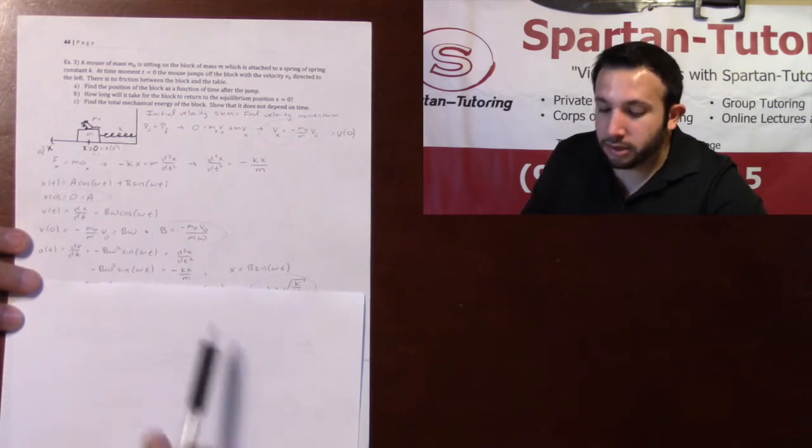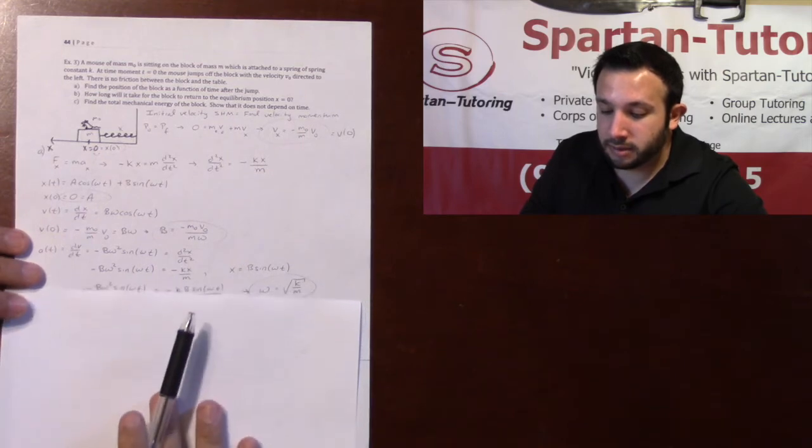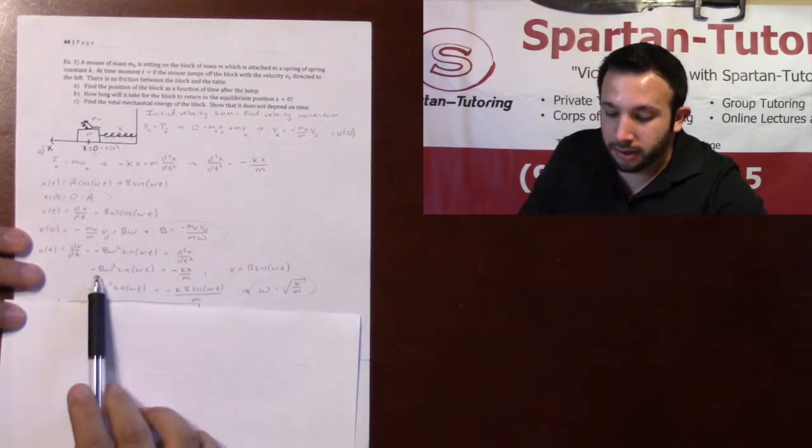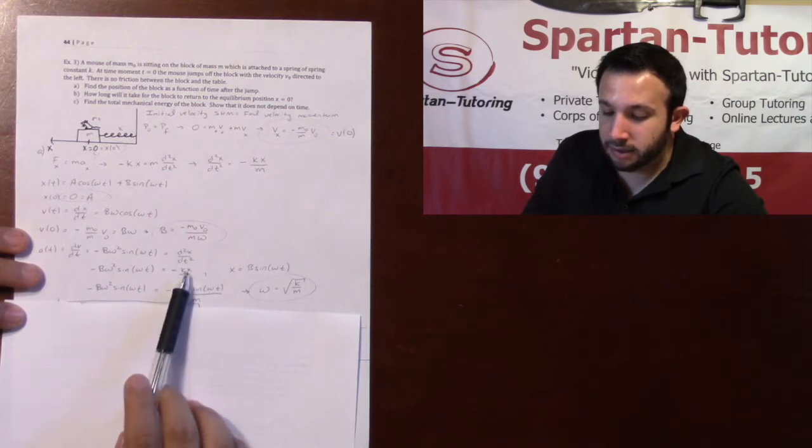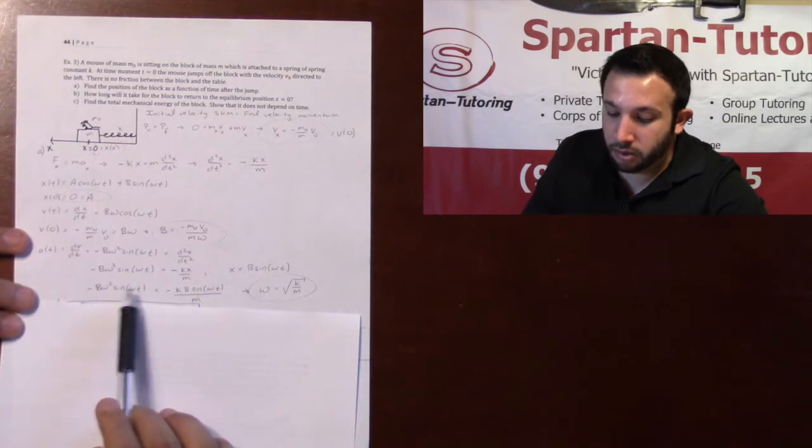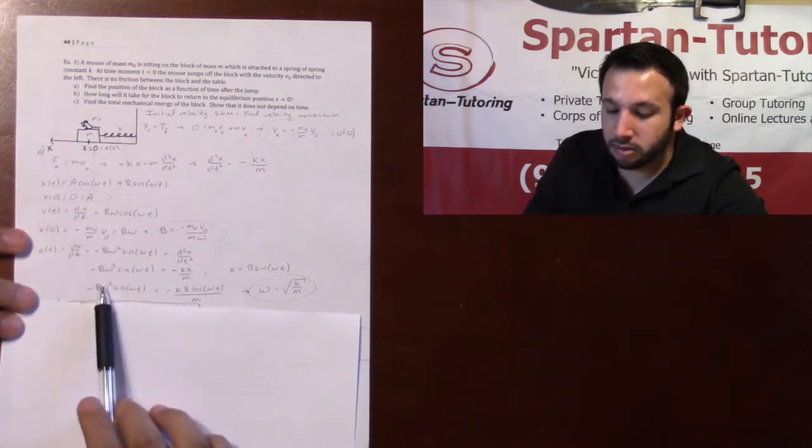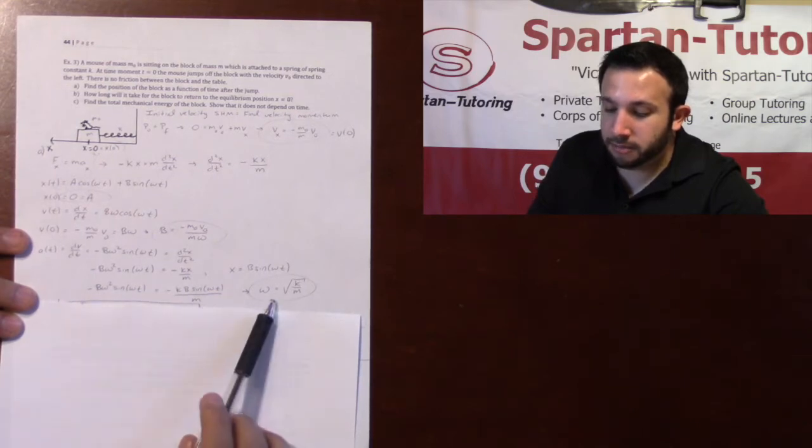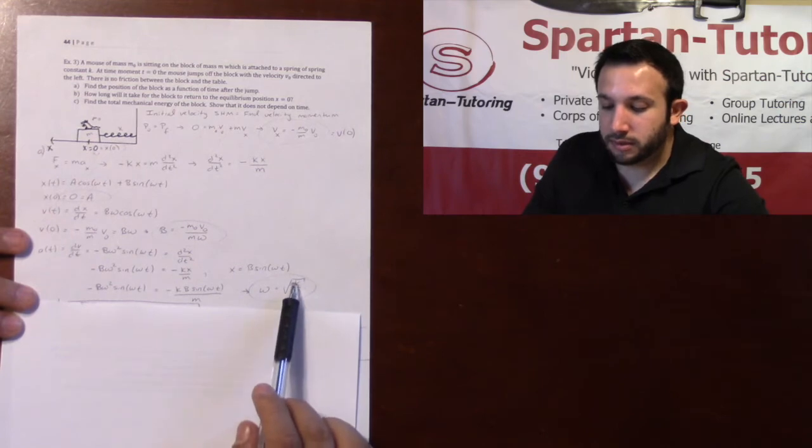However, I do know my position as a function of time is b sin omega t. And so I have negative b omega squared sin omega t is equal to negative k, my x is b sin omega t over m. Notice how the b sin omega t's end up canceling. You get that omega squared is k over m. That's where I get my omega as the square root of k over m.